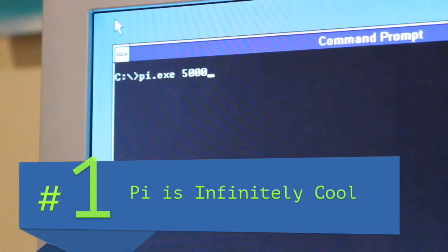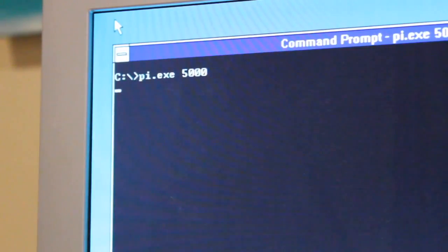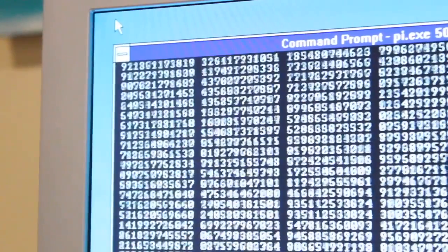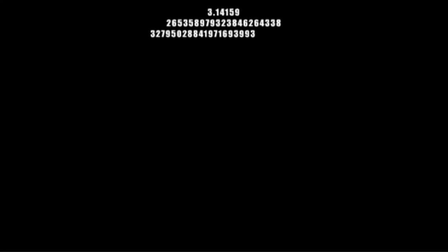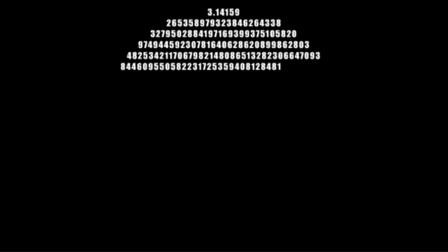Number one: Pi is infinitely cool. Pi is an irrational number, meaning its exact value is completely unknowable. Scientists have calculated billions of digits starting with 3.1415926535897 and so on, but no recognizable pattern ever emerges.